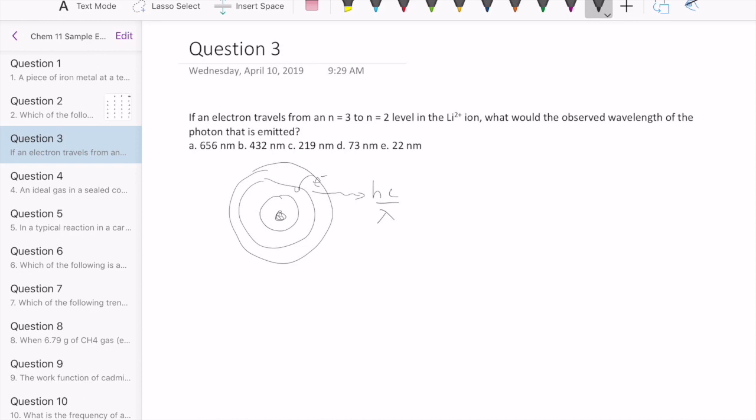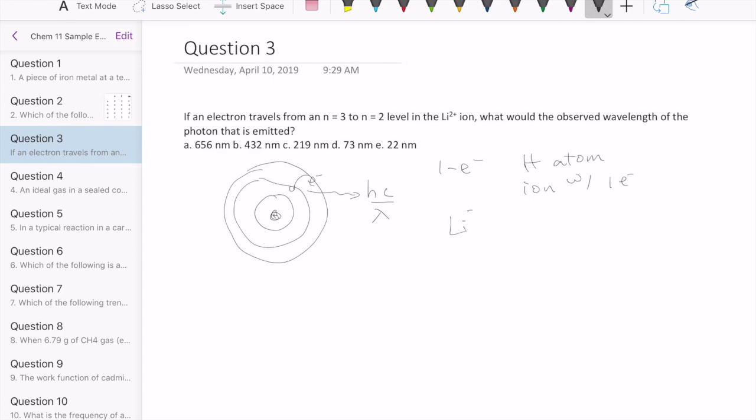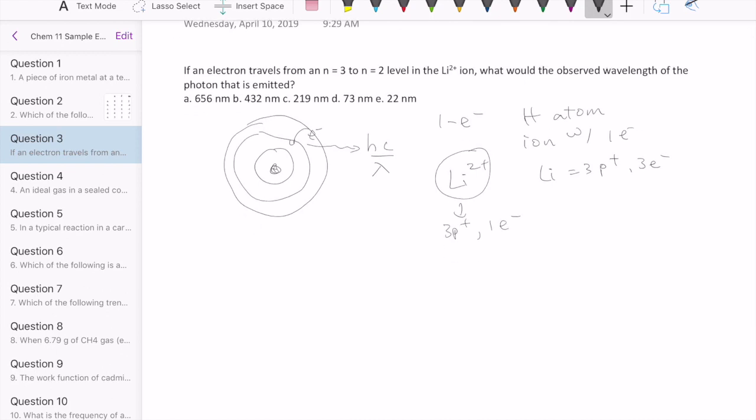This particular model works for anything with one electron, whether it's the hydrogen atom, which is typically how we start using this model, or any ion with one electron, which is what the lithium 2-plus ion is. If you look at lithium, lithium has three protons and three electrons in the atom state, but because we have lithium 2-plus, this guy would have three protons and one electron. So that means we can use the Bohr model to figure out the energy transition.